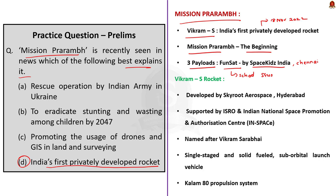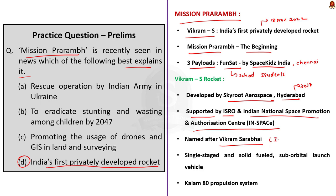The Vikram S rocket was developed by Hyderabad-based Skyroot Aerospace, a private company started in 2018, with support from ISRO and Indian National Space Promotion and Authorization Centre (IN-SPACe). The Vikram S rocket is named after Vikram Sarabhai, the founder of the Indian Space Program. It is a single-stage, solid-fueled, suborbital launch vehicle, powered by the Kalam-80 propulsion system, named after former President Dr. APJ Abdul Kalam.